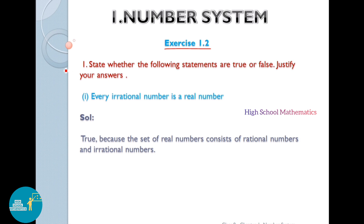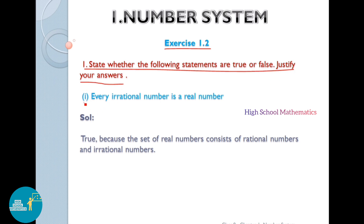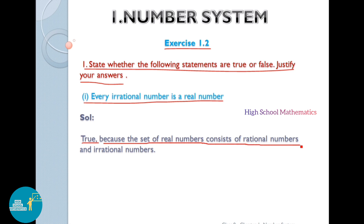First one: state whether the following statements are true or false. Justify your answers. The first statement is: every irrational number is a real number. The given statement is true because the set of real numbers consists of rational numbers and irrational numbers. So we can say every irrational number is a real number.